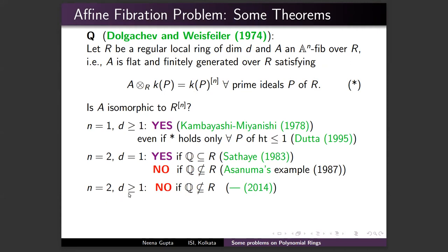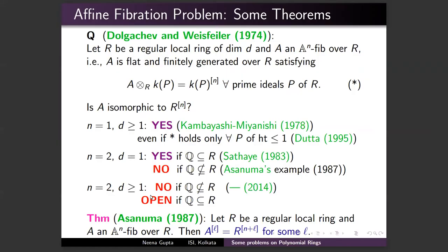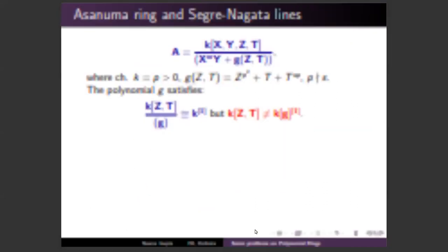I generalized Asanuma's example to higher dimensions, proving that if you increase the dimension, an 𝔸²-fibration may not be trivial when R does not contain ℚ. This is still an open problem when R contains ℚ. An important result by Asanuma is that over a regular local ring any 𝔸ⁿ-fibration is stably polynomial — after adjoining one more variable it becomes a polynomial ring. So if you want a counterexample to the cancellation problem, look at counterexamples to the affine fibration problem.